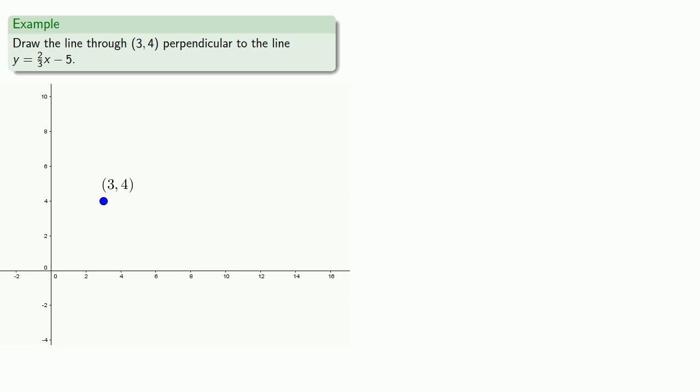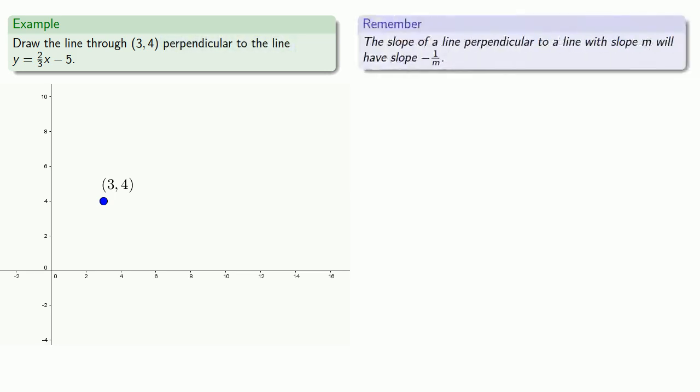Now the line we want is supposed to be perpendicular to another line. And so remember, the slope of a line perpendicular to a line with slope m will have slope minus 1 over m. So we do need to know what the slope of the line is, and remember that if our equation of the line is in the form y equals mx plus b, our slope is m, the coefficient of x.